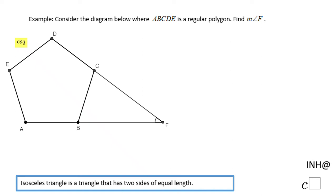Welcome, or welcome back, at C squared. In this example we need to find the measure of angle F, which is right here. We know ABCD is a regular polygon — that means it has five sides, a pentagon. We're going to take a look at this triangle, and if you notice I marked BF and CF the same way, so triangle FBC is an isosceles triangle.